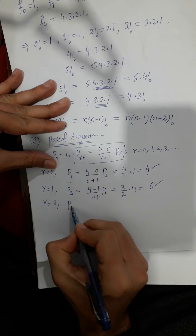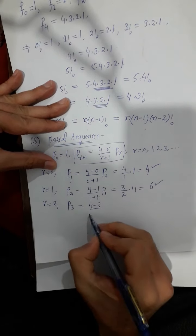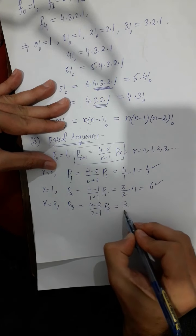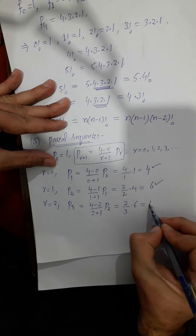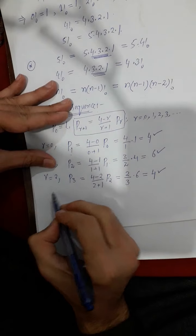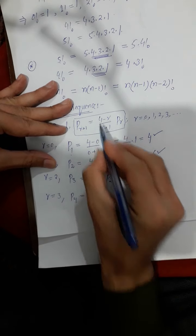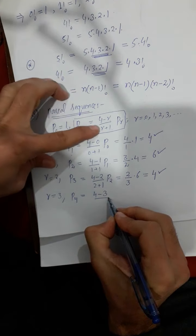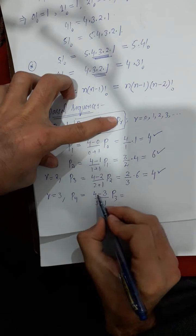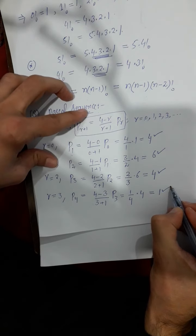For R equals to 2, P3 equals (4 minus 2) divided by (2 plus 1) times P2. That is 2 by 3, and substituting P2 equals 6, we simplify to get P3 equals 4. For R equals to 3, P4 equals (4 minus 3) divided by (3 plus 1) times P3, which gives 1 over 4 times 4, so P4 equals 1.